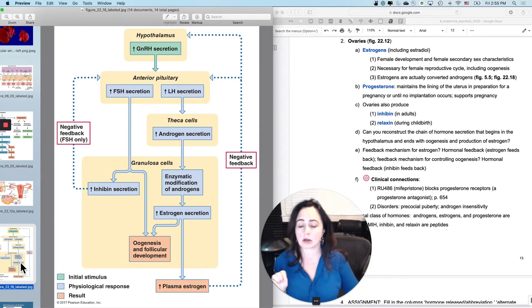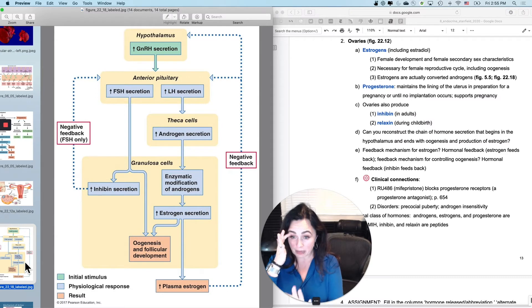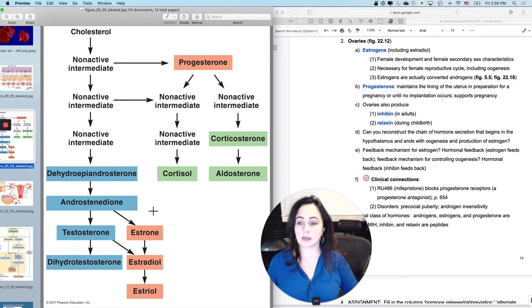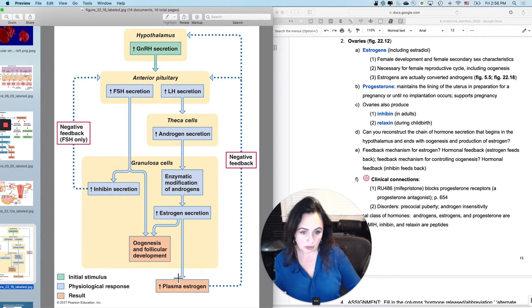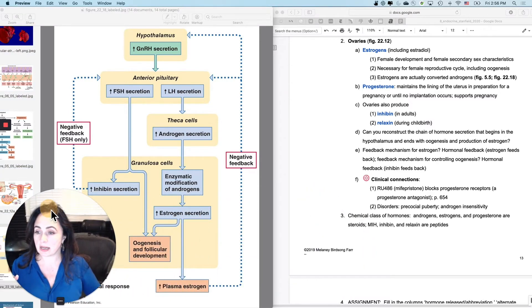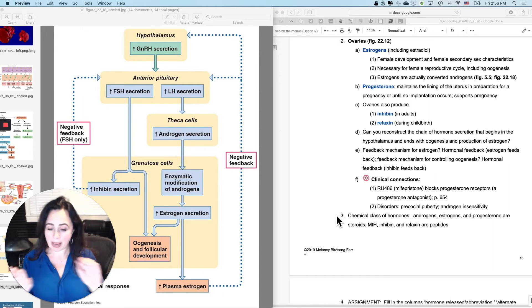This figure right here is a complicated version. Don't worry about it too much because I'm about to draw it and simplify it for you. But I do want to tell you one thing that's important. Women, people with ovaries and a uterus will make androgens first, and then convert them into estrogens. Males make androgens and don't do as much estrogen conversion. I'm going to simplify it when I draw it for you. Basically, you make androgens and then you convert them into estrogens.